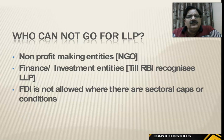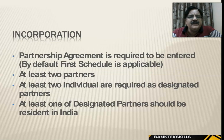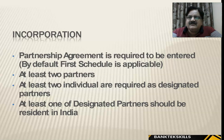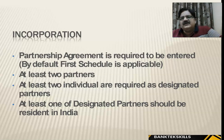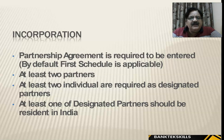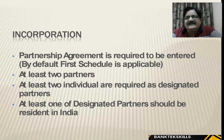Who cannot go for LLP? NGOs that are not profit-making, financial investment entities — RBI recognizes LLP but FDI is not allowed where sectoral caps or conditions exist. For incorporation, a partnership agreement is required, at least 2 partners are needed, and at least 2 must be designated as designated partners. At least one designated partner should be resident in India.